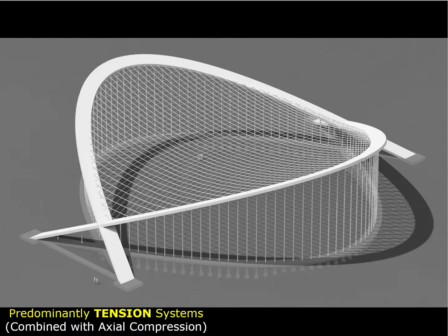When we look at Dorton Arena, we think of the cable network roof as the spectacular and innovative part of the design, and we refer to it as a tensile structure. However, the cable network spanning the space is supported both vertically and horizontally by the arches acting in compression. The arches make the cable network possible.